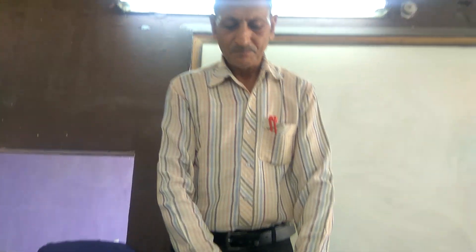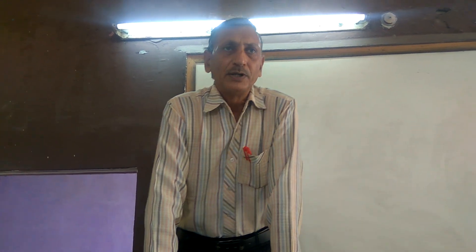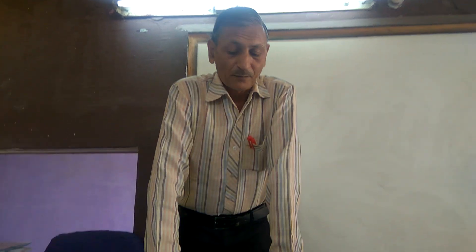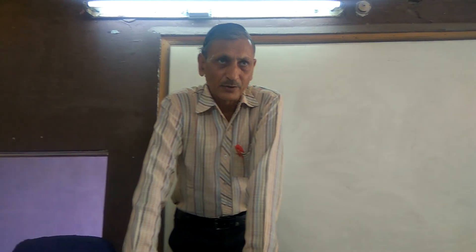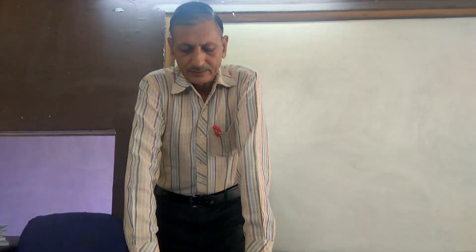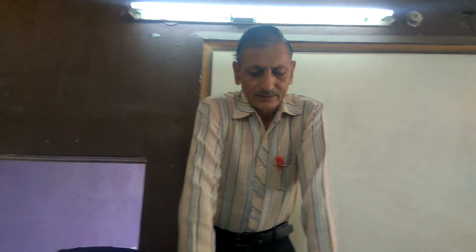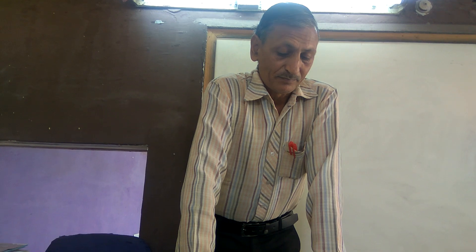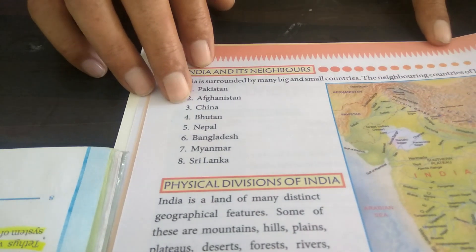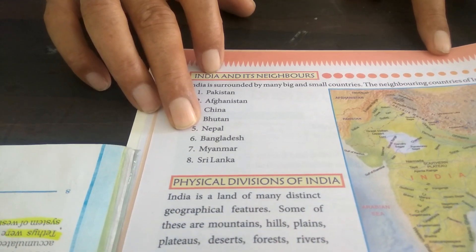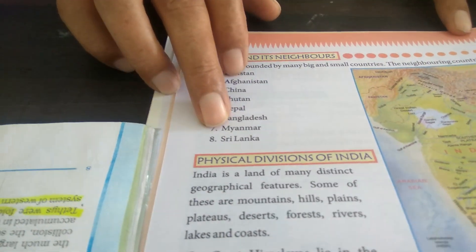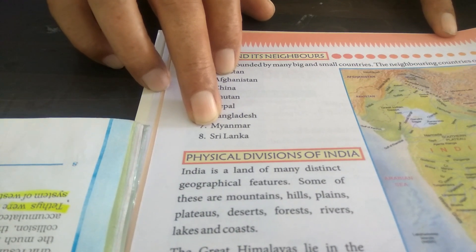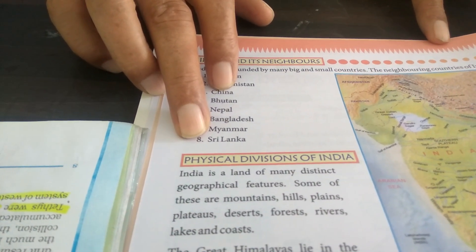So this will be your homework. Apart from this, you also have to show the neighboring countries of India — you can do this in the same map. India has got nine neighboring countries: Pakistan and Afghanistan towards the northwest, then China, Bhutan, and Nepal towards the north, Bangladesh and Myanmar towards the east, and then two of our neighbors are Sri Lanka and Maldives. You have to show them on the map of India.